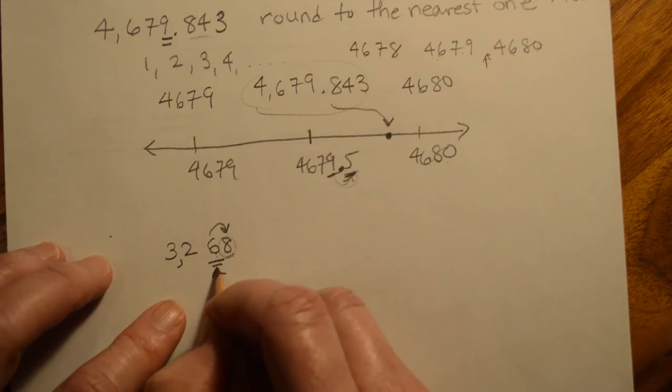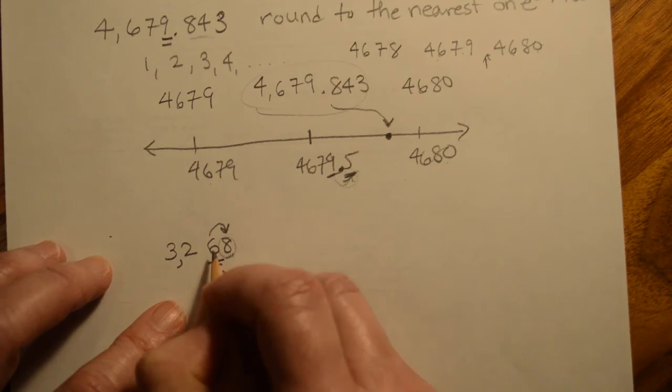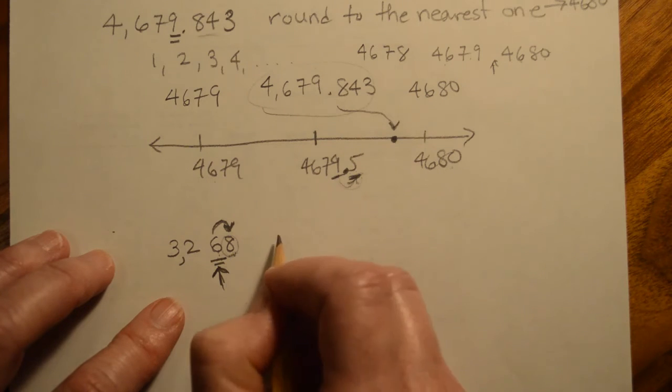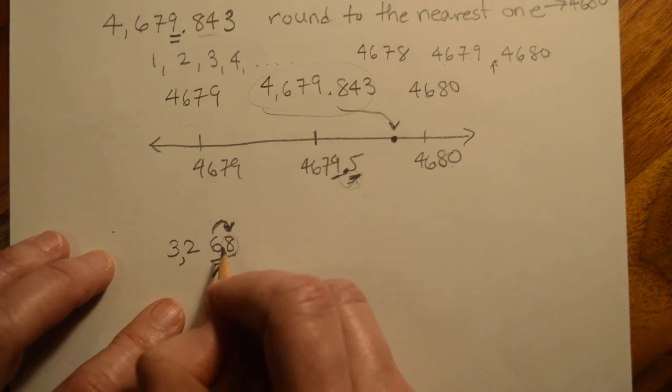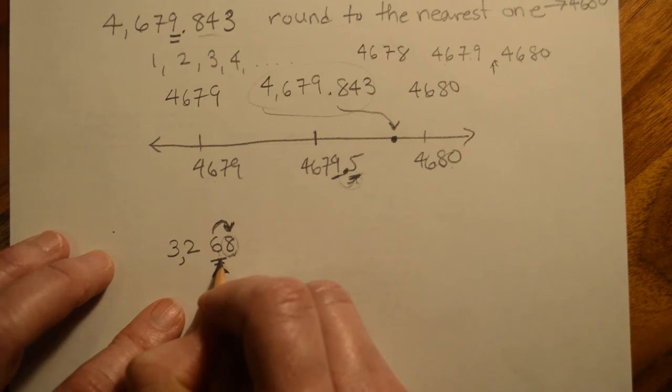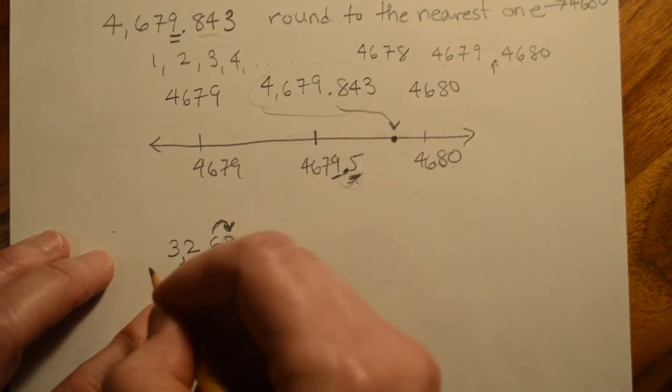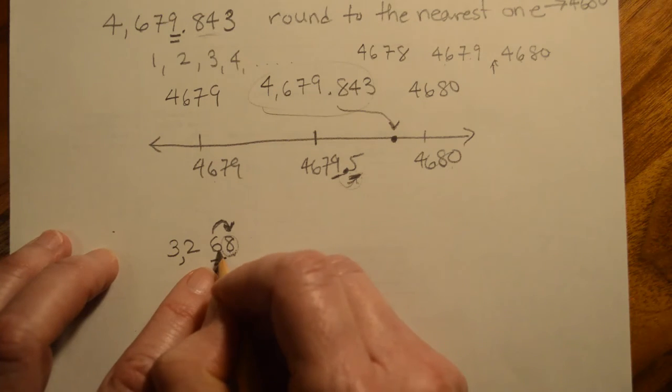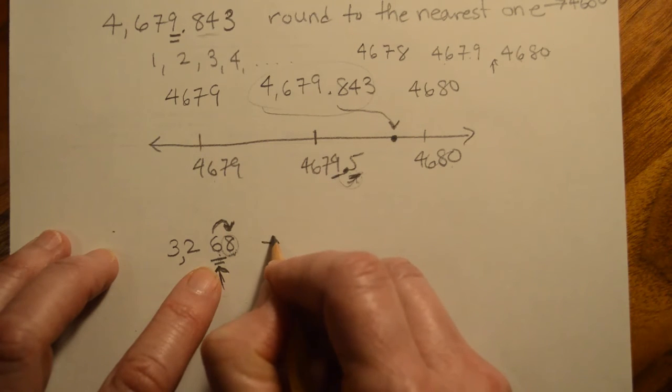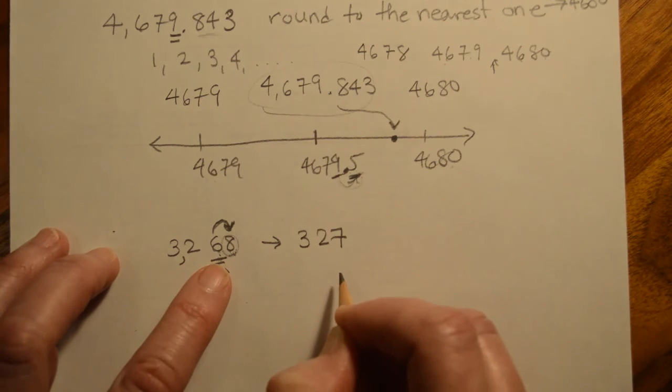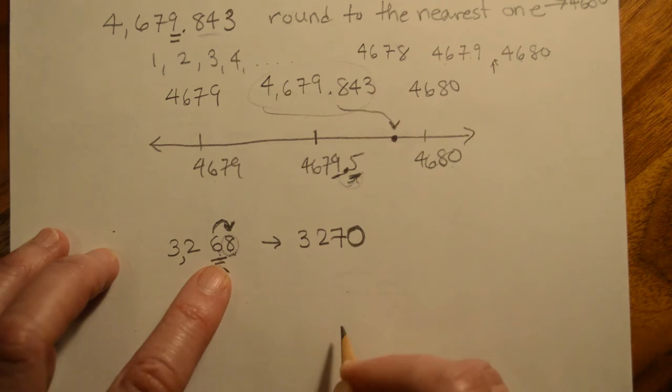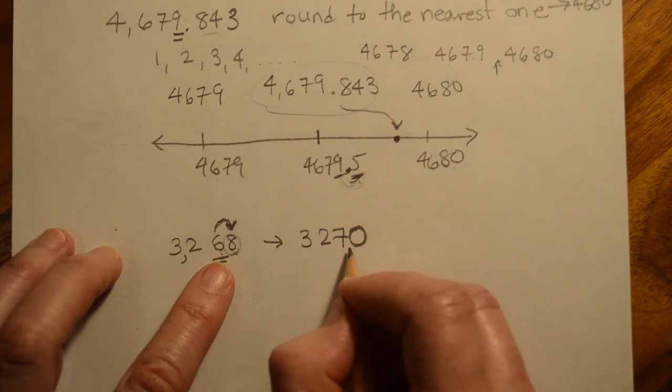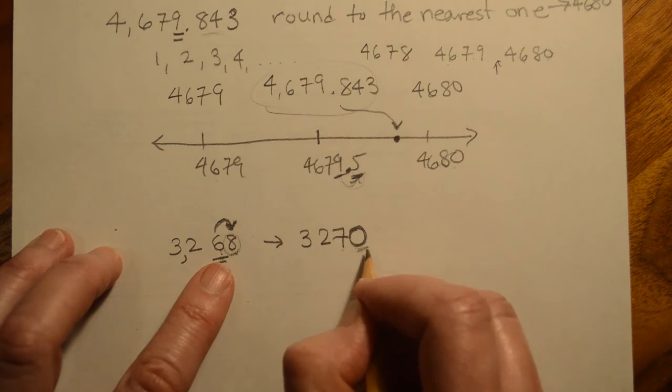So back to this, we go to the place that we're rounding to, the tens place. We look at our next door neighbor and say, did you make it to the halfway point yet? Are you five or higher? If the answer is yes, then this guy is going to move up. It's going to go to the next 10, to the next hundred, to the next thousand. So this guy, the eight is higher. So the six is going to move up. So this becomes 3,270. But remember, we're talking about the tens place. So this is going to be 70, not 78. Don't just change the six to a seven and leave the eight alone. We're going to the nearest tens place. So this has to end in a zero.